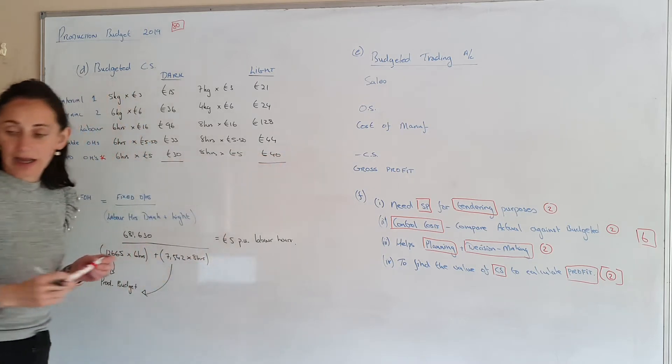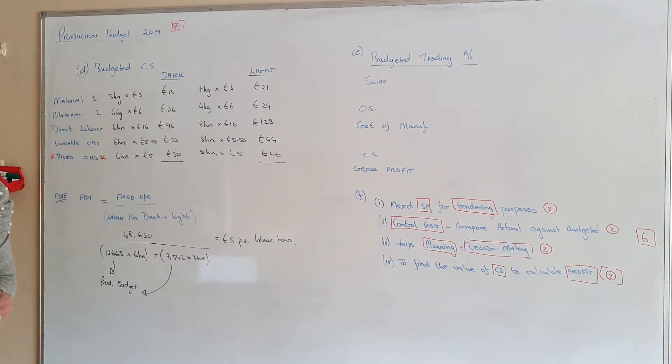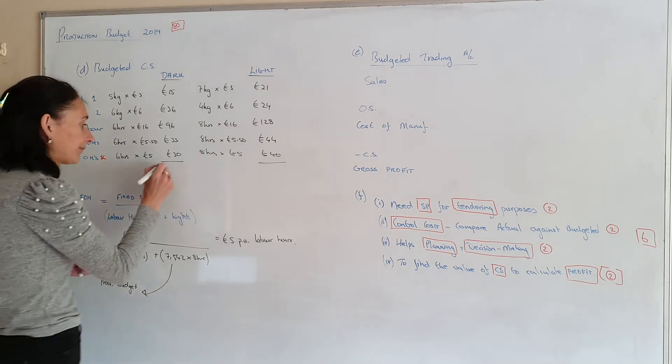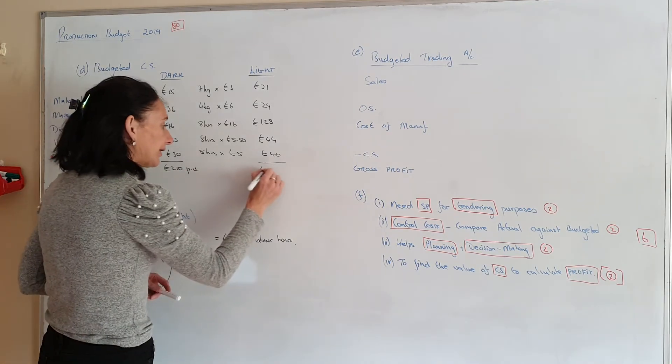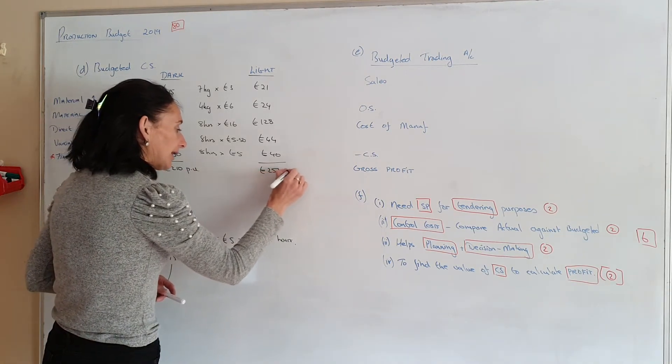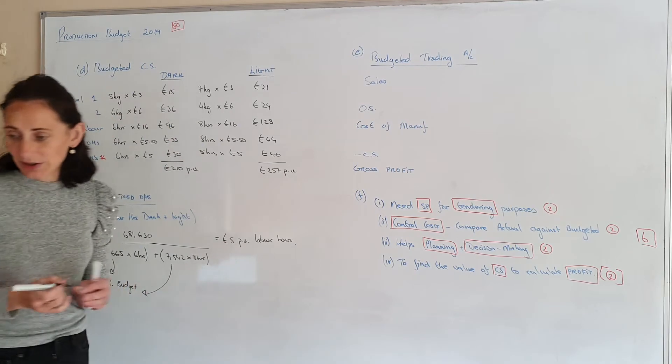And that gives me my total closing stock. So this will be €210 per unit. And this is €257. And again it's per unit. So that's the value of your closing stock per unit.